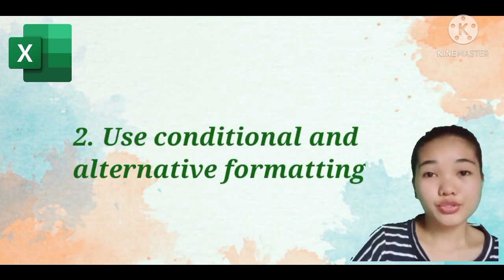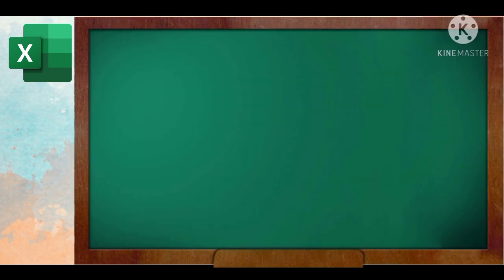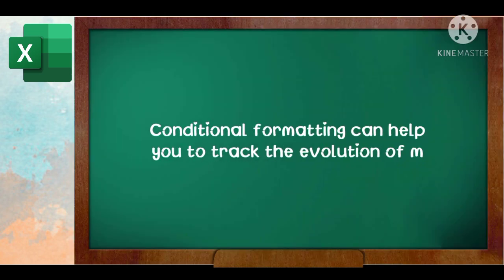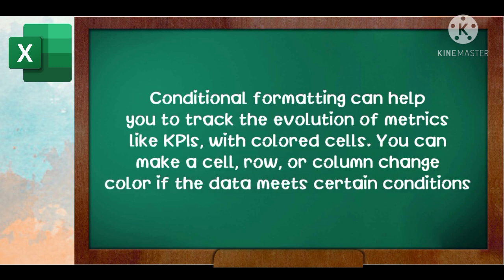Number two, use conditional and alternative formatting. Conditional formatting can help you track and evaluate metrics like KPIs with colored cells. You can make a cell, row, or column change color if the data meets certain conditions.